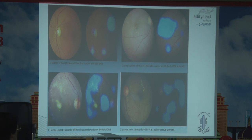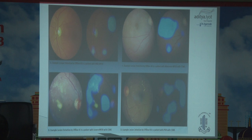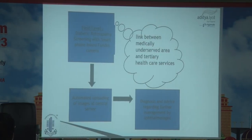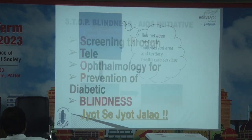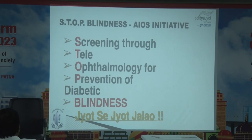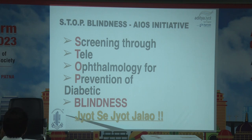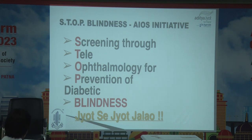You can find which is referable and which is non-referable. That's why Google's Sundar Pichai noted that AI can even determine whether a fundus belongs to a female or a male — the artificial intelligence finds things you cannot see or think of. There is a link between medically underserved areas and tertiary healthcare services. As president of All India in 2019, I made a five-point program, and the fourth point was 'Stop Blindness,' where I introduced the acronym screening through teleophthalmology for prevention of diabetic blindness.